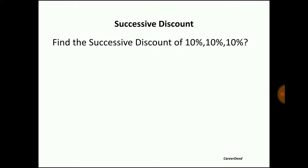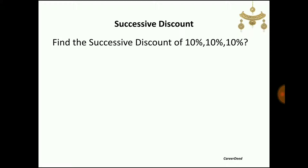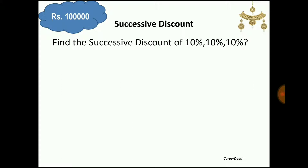Here you have an example: find the single discount of 3 successive discounts — 10%, 10%, and 10%. For your better understanding, assume you entered into a jewelry shop and you looked at a beautiful necklace. You asked the price to the shopkeeper, he said the price of the necklace is 1 lakh rupees. So 1 lakh rupees is obviously 100% for you.